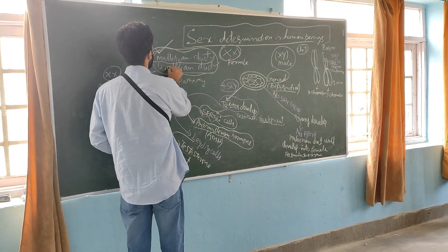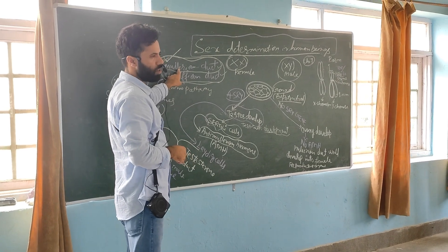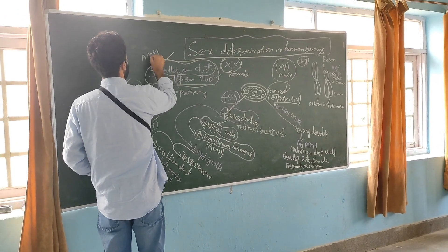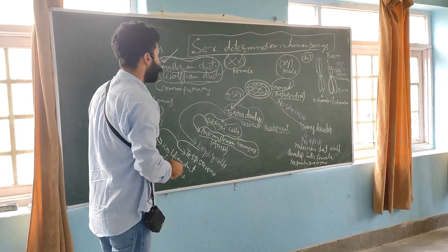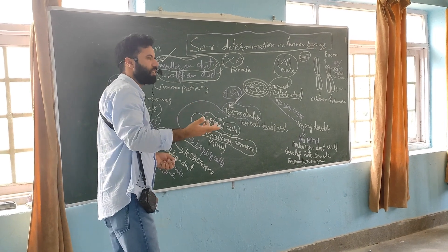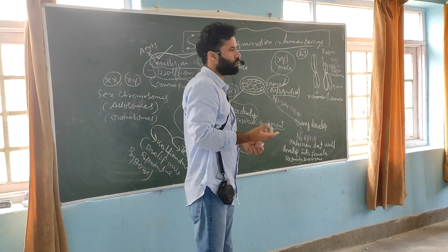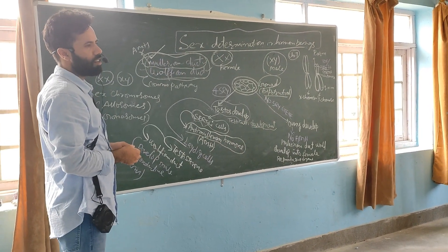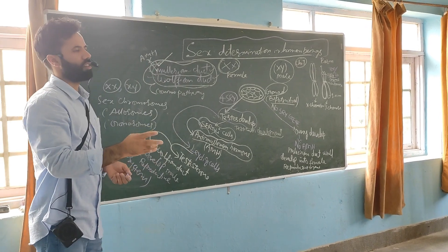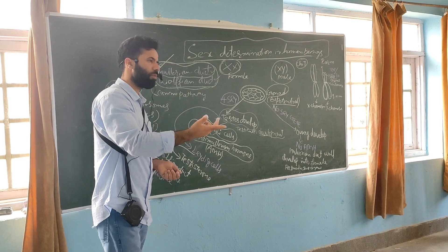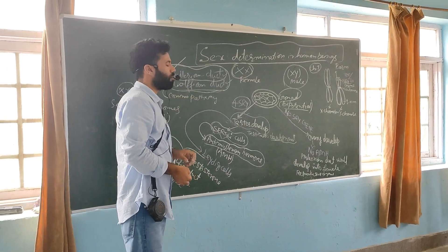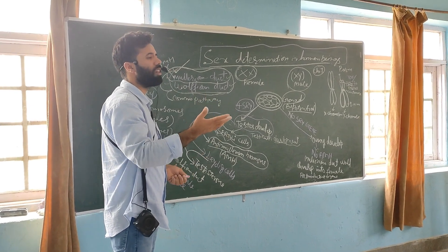There are two ducts: the Mullerian duct and the Wolfian duct. If anti-Mullerian hormone is present, it will cause the Mullerian duct to regress, and the Wolfian duct will develop into male reproductive structures. So in the presence of anti-Mullerian hormone, the Mullerian duct will be regressed and the Wolfian duct will give rise to the male reproductive system.